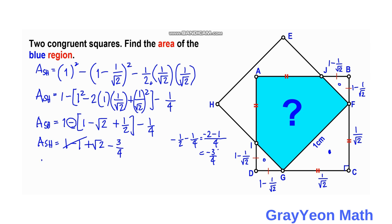So our answer for the area of the shaded region is equal to square root of 2 minus 3 over 4 square centimeters. And that is our answer.